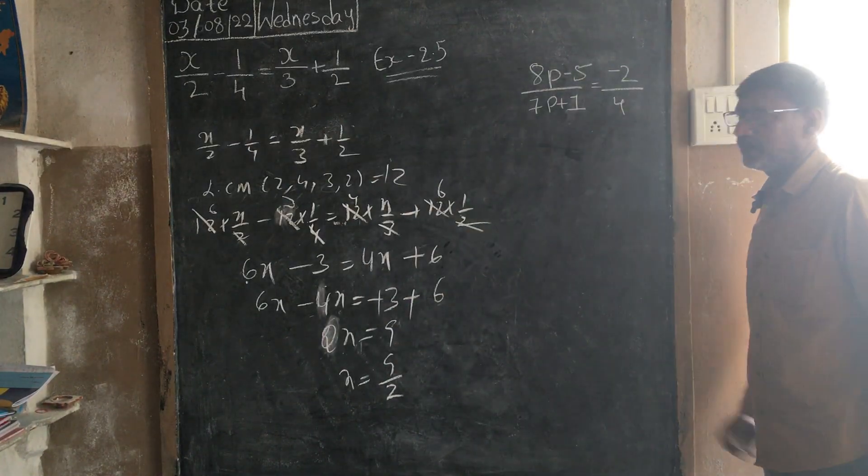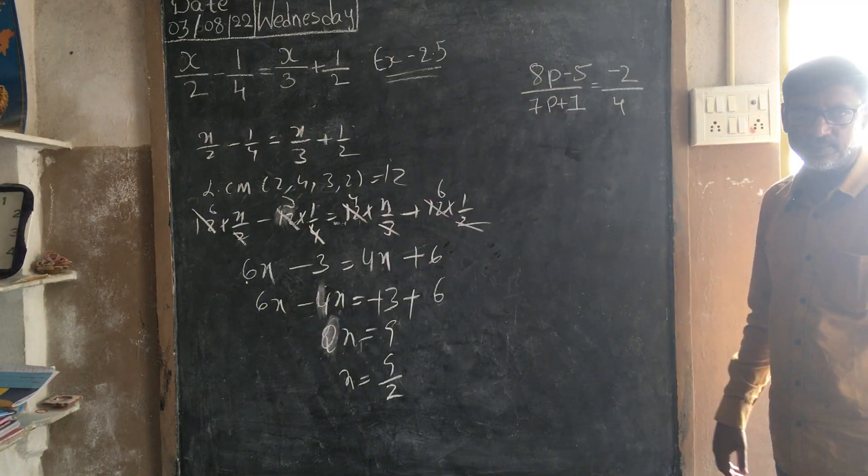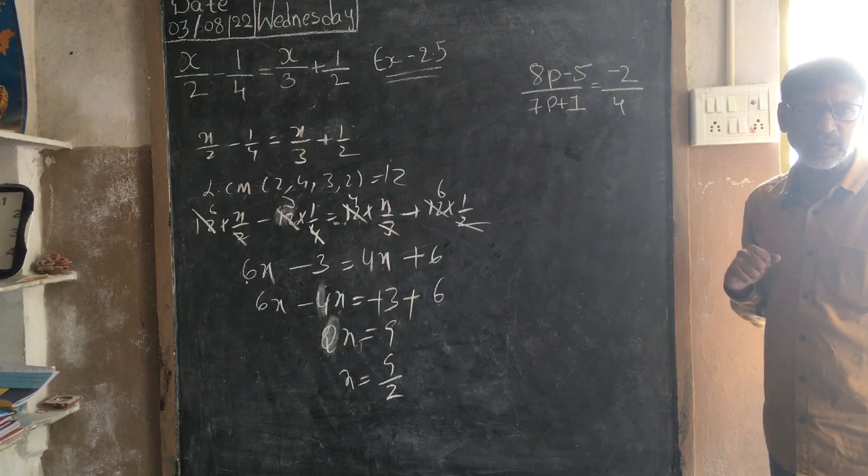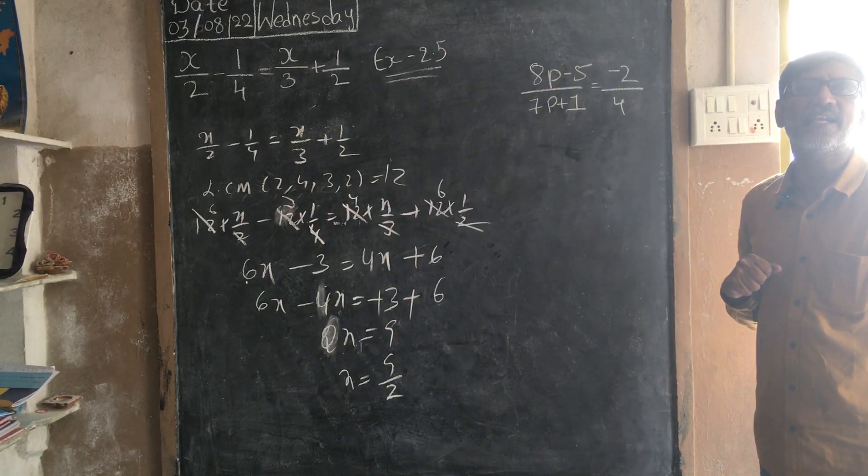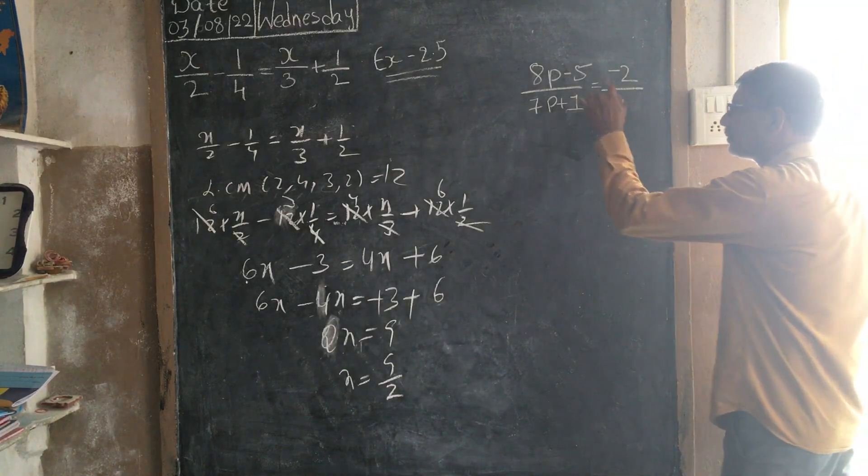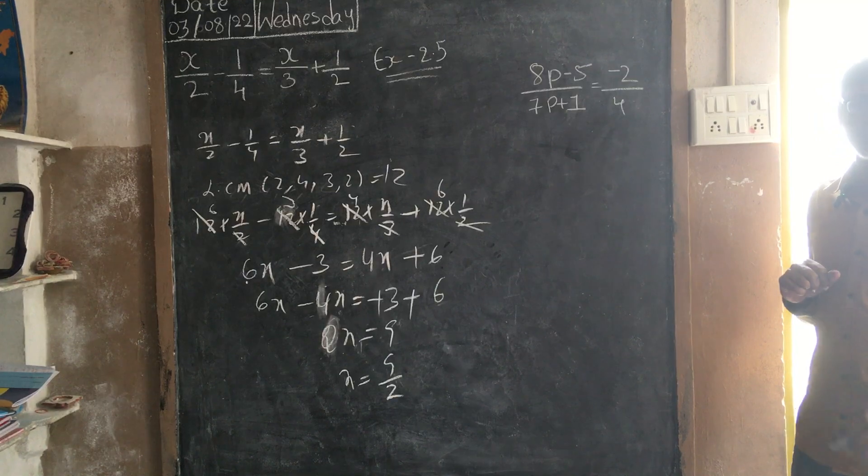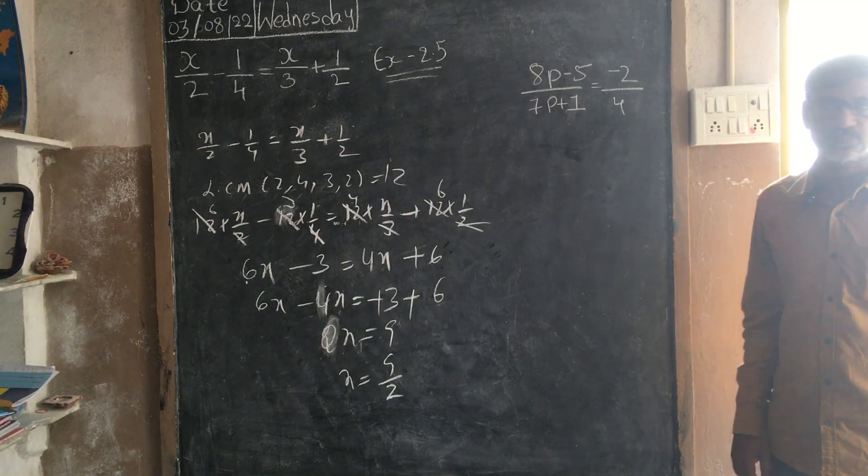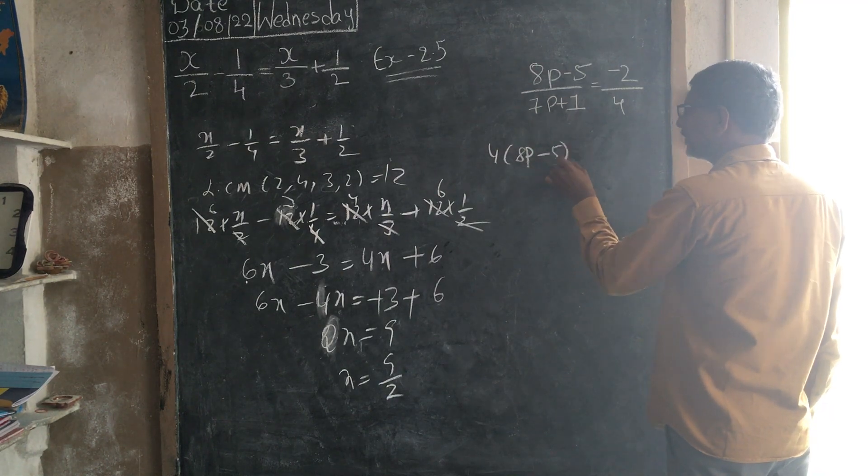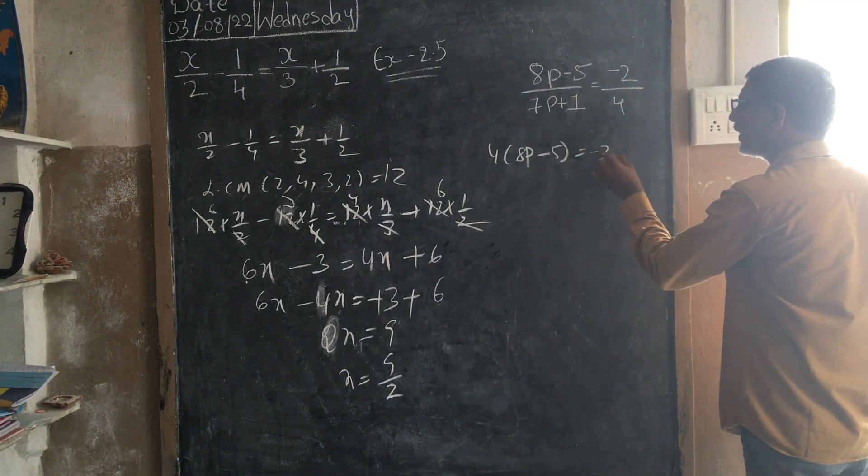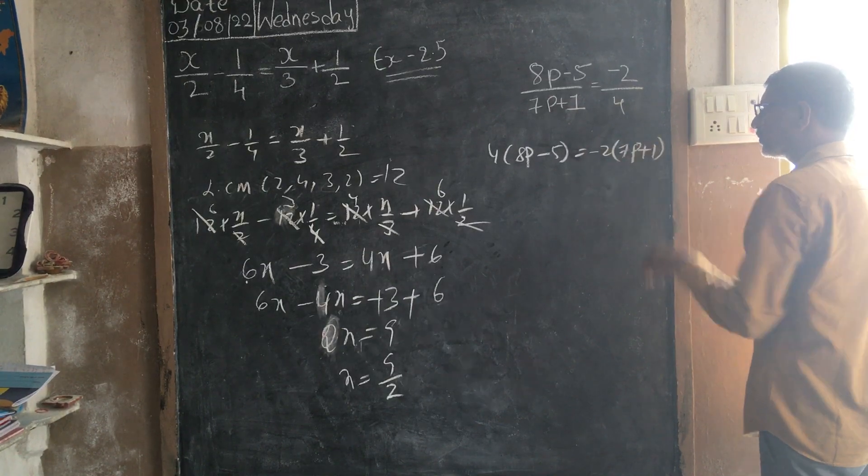Here is different, this is different question compared to that one. Very simple, taking cross multiplication, cross multiplication, this is multiplied with this one and this is multiplied with this one. So simple, we can simplify it. 4 times 8p minus 5 is equals to minus 2 times 7p plus 1, that's it.